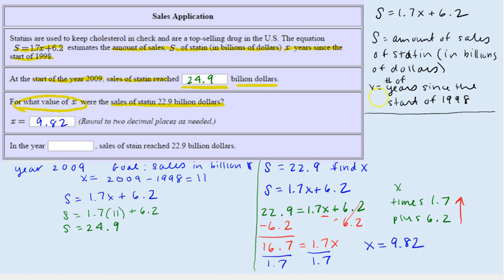So that means looking back at what X represented, 9.82 years past the start of 1998, the sales of statin reaches $22.9 billion.